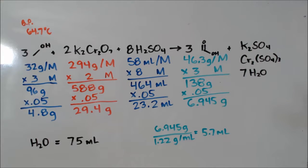75 milliliters this time. My yield should be 6.95 grams, and to get the milliliters I divided by the density, grams cancel out and I get milliliters. 5.7 milliliters is my yield, what I should get.